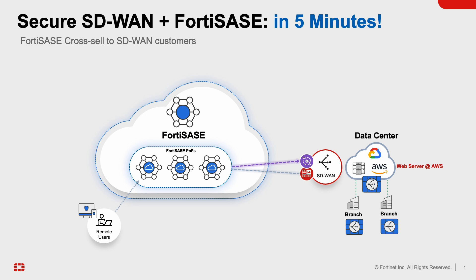Once these users are connected, in order for them to access resources within the private data center, we have the ability to connect using SD-WAN. When you connect FortiSASE into Fortinet secure SD-WAN, we ensure application resiliency even for remote users accessing private applications. In this demo I'll show how easy it is to configure secure private access as well as zero trust security posture to connect the FortiSASE environment with the Fortinet SD-WAN environment.